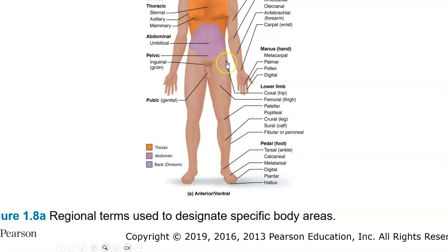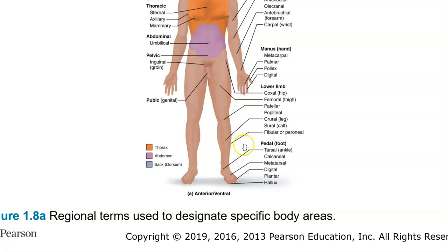The hip is coxal. The thigh is femoral. The knee is patellar, and the back of the knee is popliteal. The leg in anatomy — when you use just the term leg — means the shin or lower leg. The front side of the lower leg is called the crural or shin region. The calf is sural. The fibular or peroneal region is the outside, lateral portion of the leg. The foot region is pedal. The ankles are tarsal. The heel is calcaneal. The bones of the foot are metatarsals. The toes are digital or phalanges, and the big toe — great toe — is called the hallux.